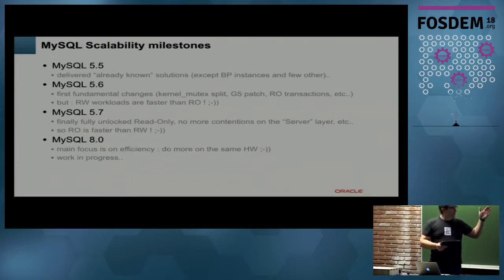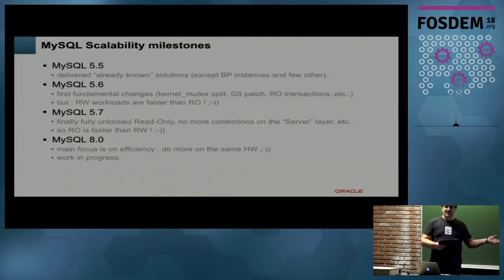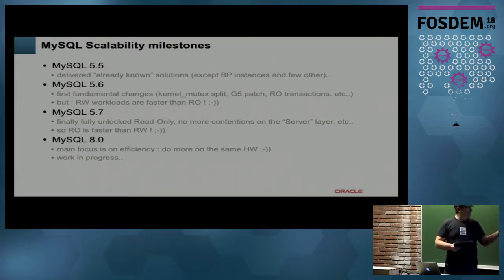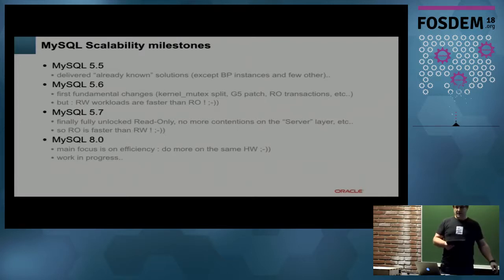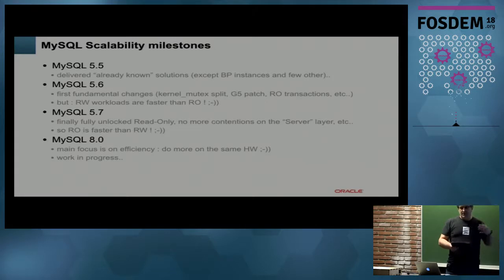Historically, from MySQL 5.5, we delivered some fixes which were already known. In 5.6, we started to do some deep changes which brought huge pain because there were many regressions. The most painful point in 5.6 was that writes were faster than reads — if you wanted to read faster, you needed to send some writes to unlock your reads. In 5.7, we finally fixed the reads, but we started to lose efficiency. There is always a cost on something.